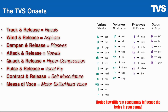Let's look at this graphic. On the left, we have the eight TVS onsets — the eight ways that we train to start notes. The track and release onset is characterized by the fact that it starts with nasals. Wind and release just means windy — it starts with an H. A dampened and release onset starts with plosives, which are consonants that explode: B, D, G, P, T, K. Those are all plosives, and therefore they are dampened and release onsets.